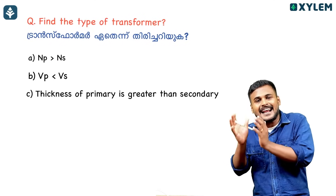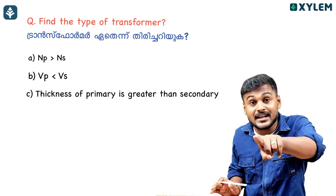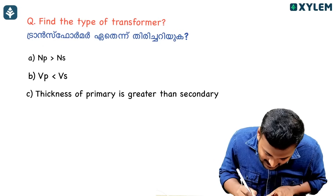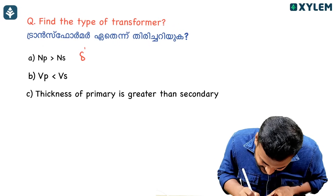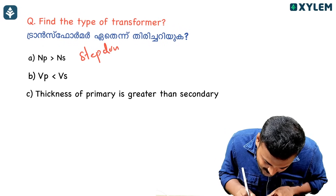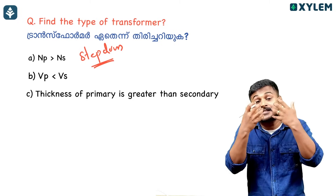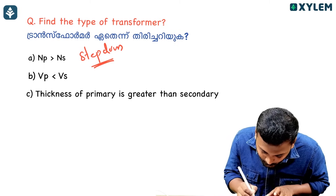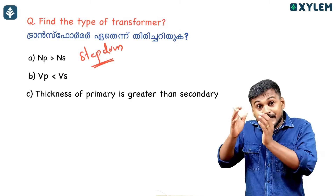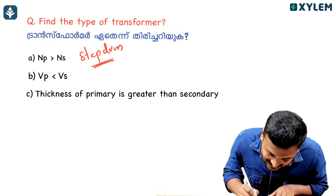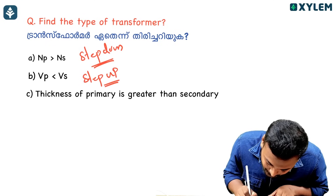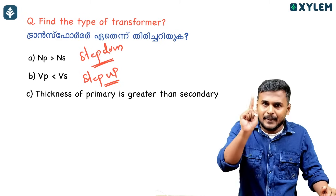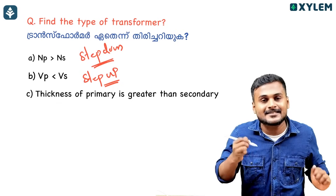Next question: Find the type of transformer. If Np is greater than Ns — primary number of turns is greater than secondary — that means it is a step-down transformer. If secondary voltage is greater than primary voltage, that means it is a step-up transformer.